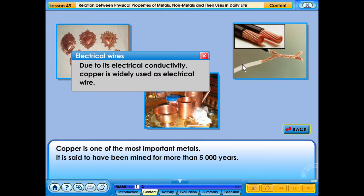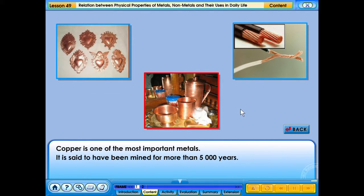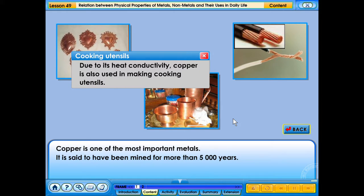Due to its electrical conductivity, copper is widely used as electrical wire. Due to its heat conductivity, copper is also used in making cooking utensils.